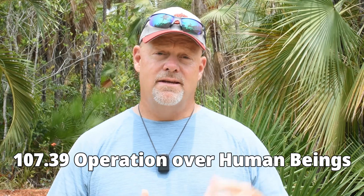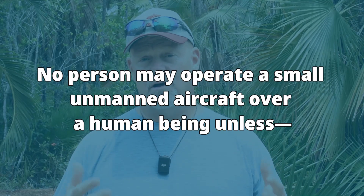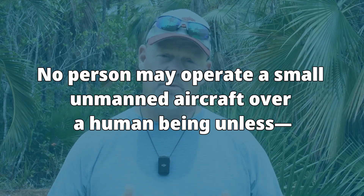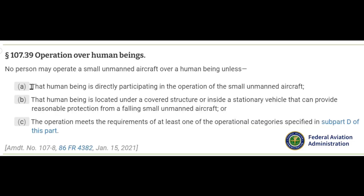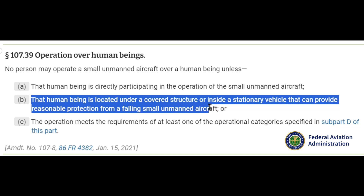First, let's start with Part 107.39, titled 'Operation Over Human Beings.' 107.39 states that no person may operate a small unmanned aircraft over a human being unless: (a) that human being is directly participating in the operation of the small unmanned aircraft, or (b) that human being is located under a covered structure or inside a stationary vehicle that can provide reasonable protection from a falling small unmanned aircraft.